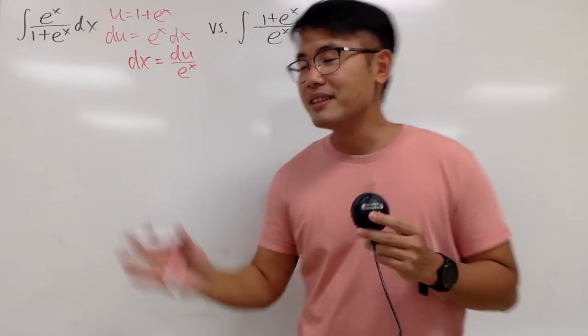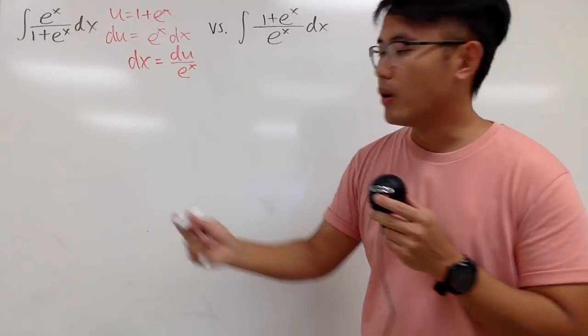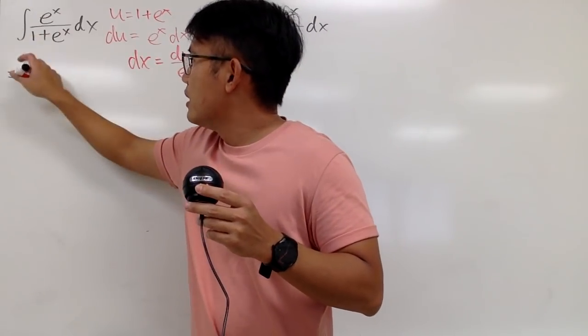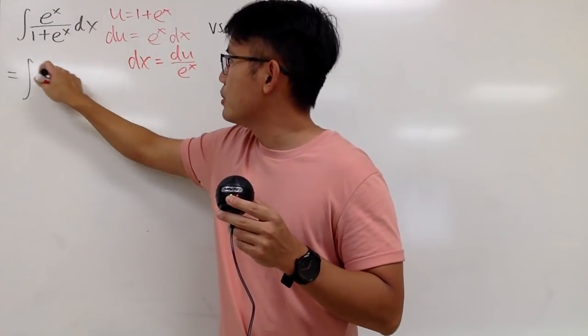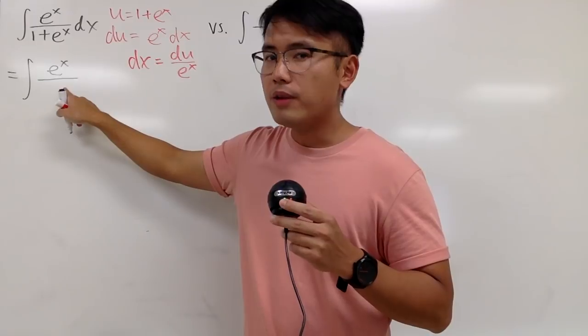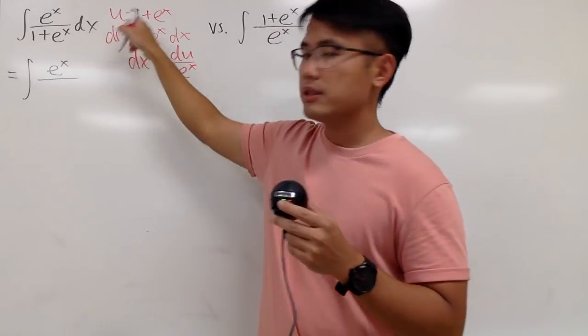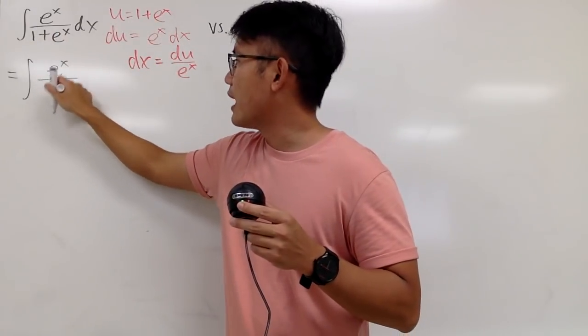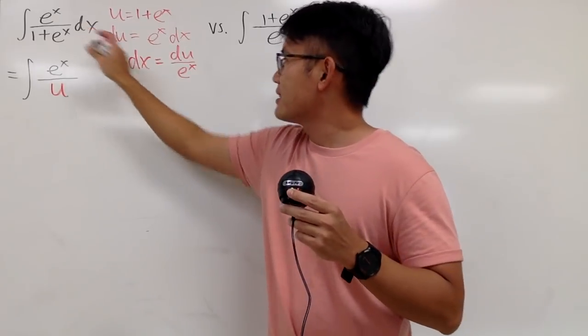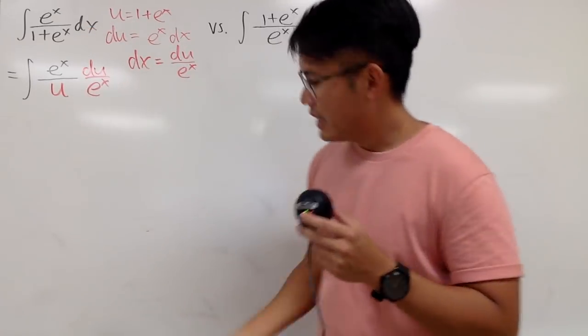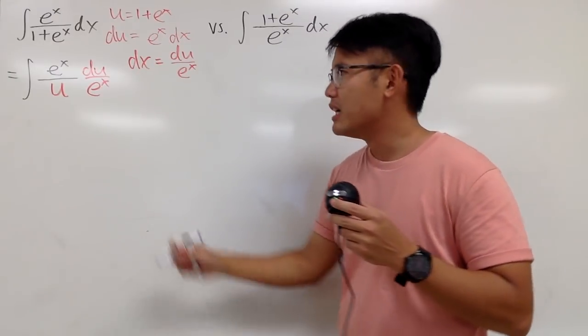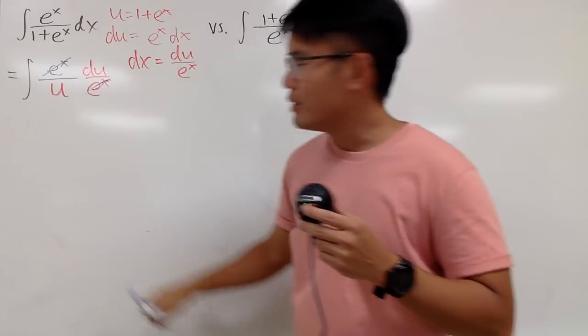And now we will take this integral to the u world. This right here is the integral. On the top, I still have e^x, let me just write that down. And this is over the denominator, which is the u, so I will just put that down. And dx is du over e^x. And the best part about this is that the e^x cancel each other.